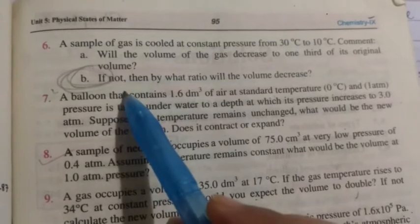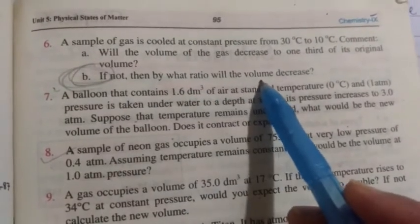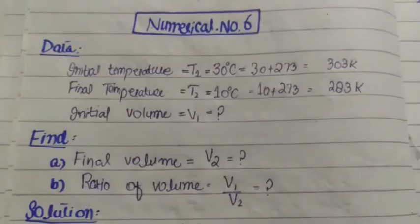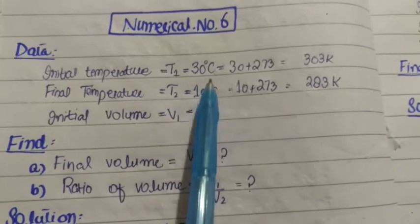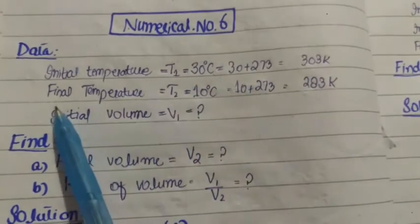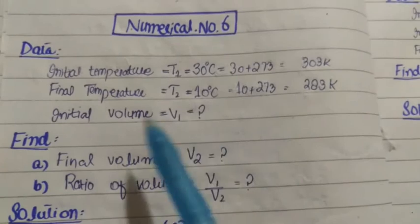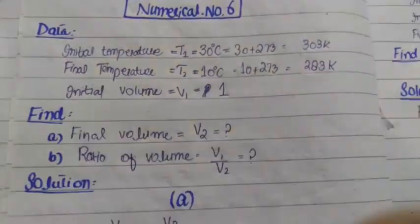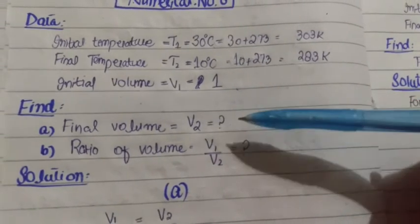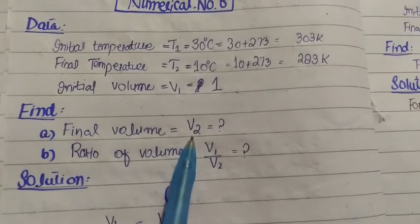Part B: If not, then by what ratio will the volume decrease? So first of all, we have the initial temperature given, t1 is 30, converted to Kelvin by adding 273, so t1 is 303 Kelvin. Final temperature t2 is 10 Celsius, which is 283 Kelvin. We have initial and final temperature. Now initial volume we have not considered - we have to consider it. We will take v1 as 1, and final volume v2 we need to find. In part B we need to find the ratio v1 over v2.